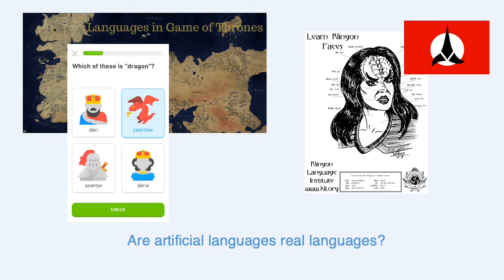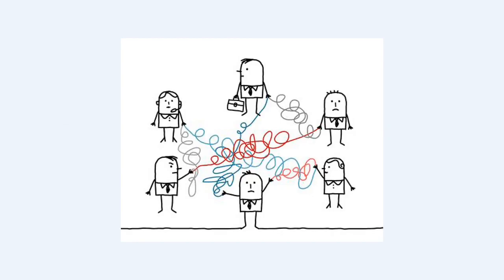We also talk about artificial languages, such as Esperanto or the fictional languages of Game of Thrones or Star Trek. Are these considered real languages? Why or why not? How are they different, and is it useful to learn an artificial language? For example, did you know you can learn High Valyrian on Duolingo? Then we put all of these pieces together to see how language works in our everyday communication.